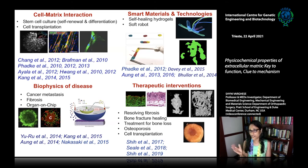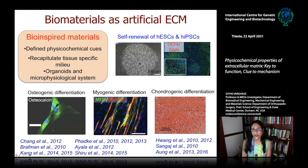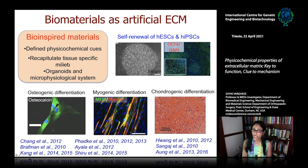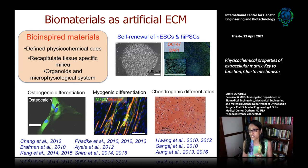You can ask me questions at the end or in between. In the case of cell-material interactions, we use biomaterials as an artificial ECM. We are creating bio-inspired materials and biomaterials with defined physical and chemical cues. We recapitulate a tissue-specific milieu using organoids and microphysiological systems — essentially organ-on-chip technologies. Here we are looking at self-renewal of ESCs and iPSCs. The question was: can we replace Matrigel with a synthetic material? Can we create a tissue culture platform that supports ESCs and iPSCs?